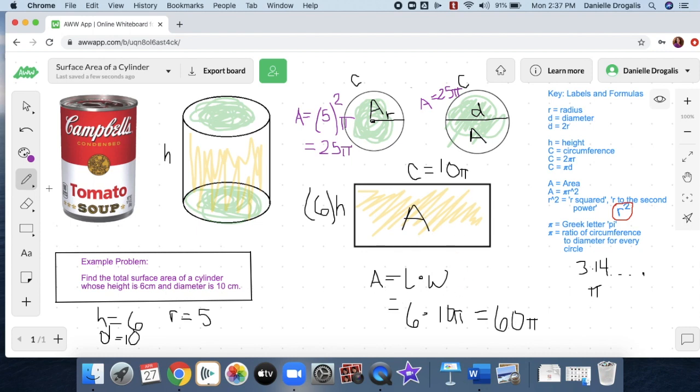From above we have a total of 50π, and for the sides of the cylinder we have 60π. So sliding again into another color, 50π plus 60π will get us 110π.